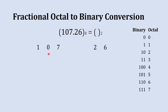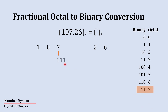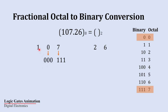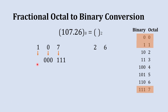Let's start with the number 107. First we start with 7 — the binary equivalent to 7 is 111, so we write 111. The next digit is 0 — the binary equivalent to 0 is 000. The next digit is 1 — the binary equivalent to 1 is 001, so we write 001.